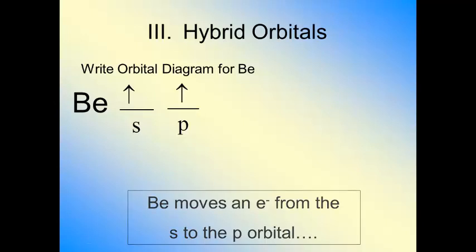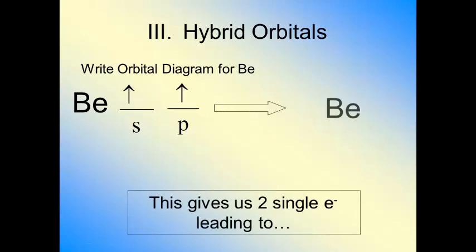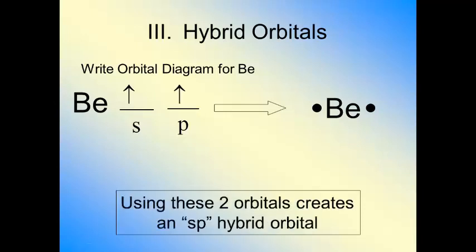Now that you have these two single dots, we have a Lewis symbol that looks like this, which is exactly what we know beryllium to do. It's got two electrons in its s orbital, it forms two single dots, and the Lewis symbol looks like this. We now know that this forms two bonds.